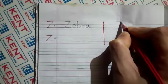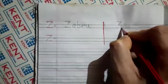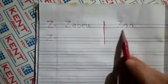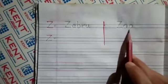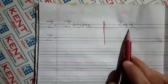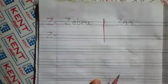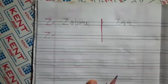Second word is Z O O, zoo. Zoo means chidiya ghar. So students, you have to practice these words.